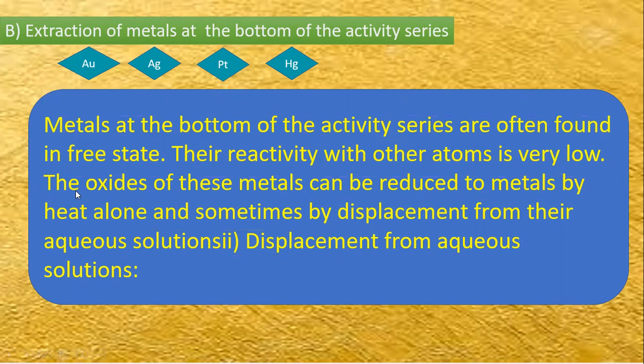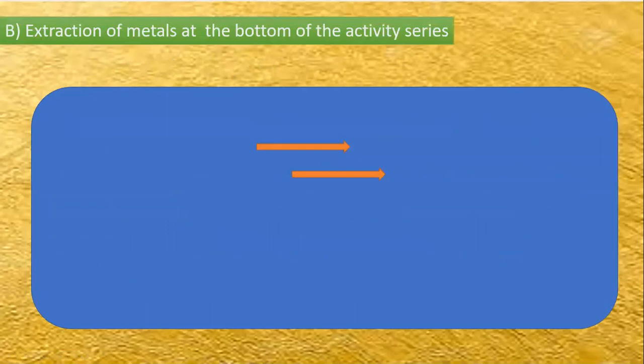The oxides of these metals can be reduced to the metals by heating alone, because these metals have a very low melting point. On heating, they immediately turn into liquid or vapour form. That is why this method is adopted, and sometimes by displacement from aqueous solutions as well.